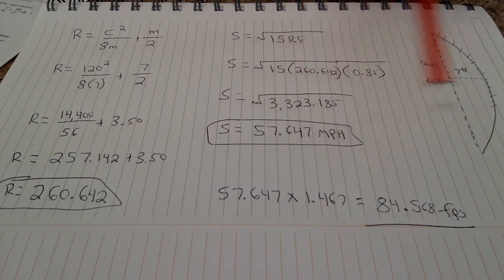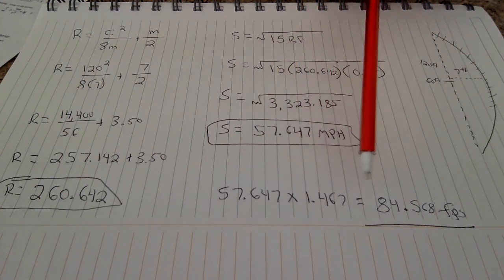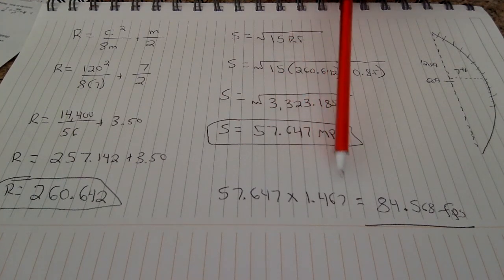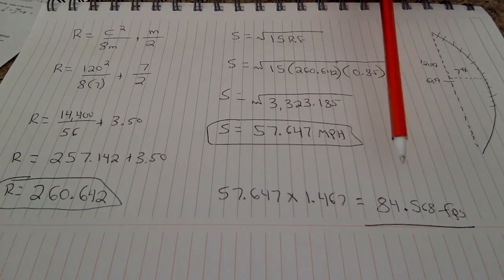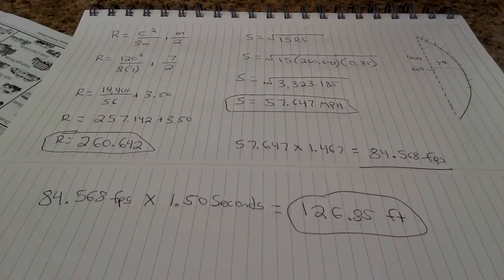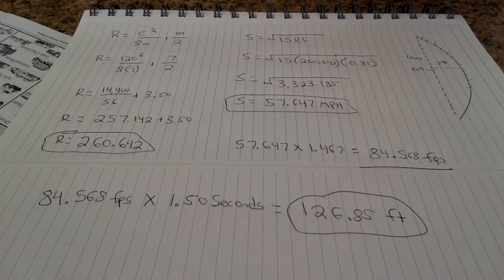If you want to convert that into feet per second, you're just going to use the same formula as before. Take your speed times 1.467 and you get 84.568 feet per second that that vehicle was traveling. So there's one more thing I want to talk about.